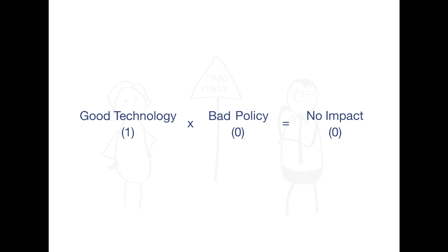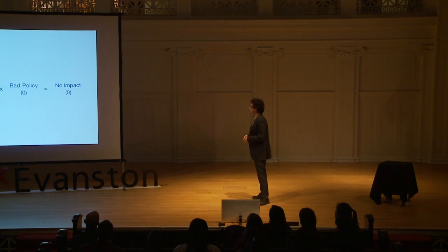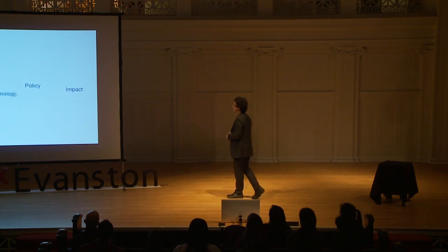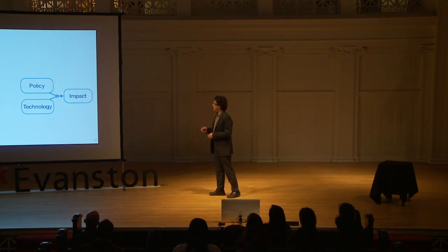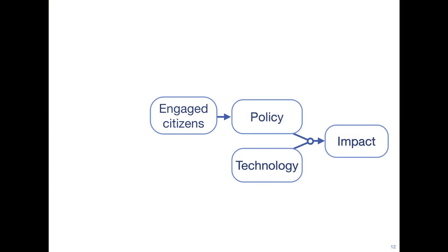So we're really left with engineers who are at the mercy of policy problems, not ones that can solve them. In short, good technology and bad policy means no impact. Now, in a democracy, you can't get good policy without engaged citizens, and that means civic education.